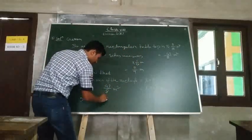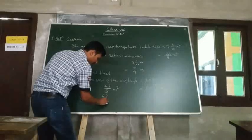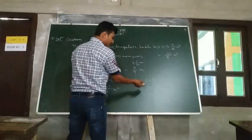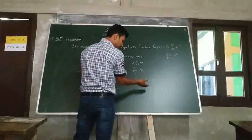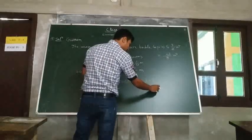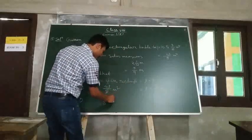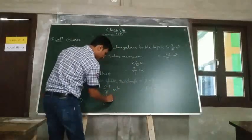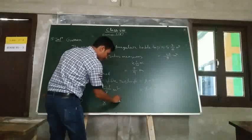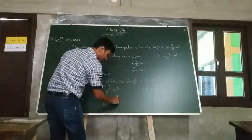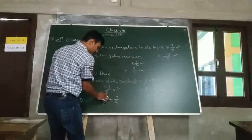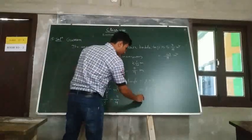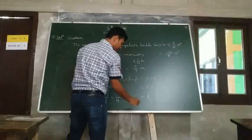Now, 43/8 equals length times 9/4. Since 9/4 is multiplied with the length, we transpose it to the other side. So 43/8 divided by 9/4 equals length.